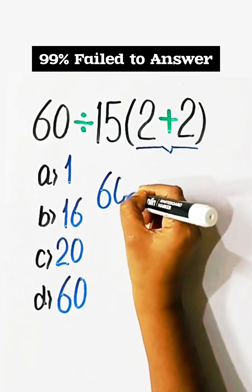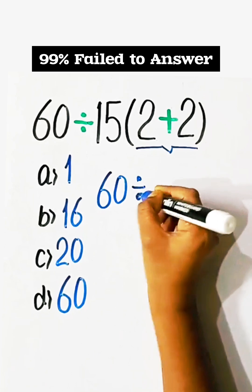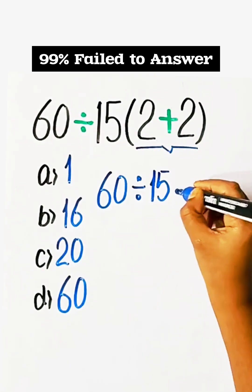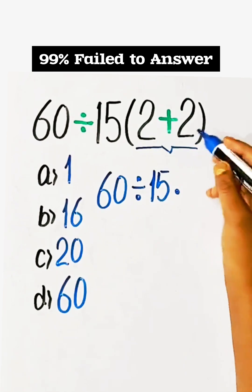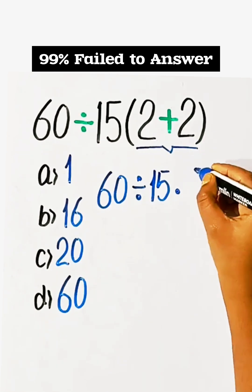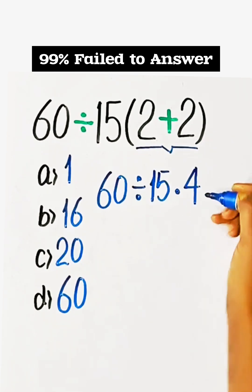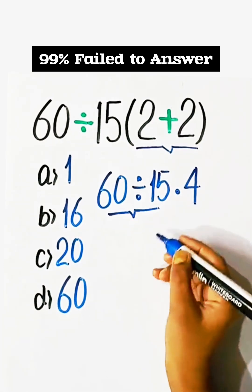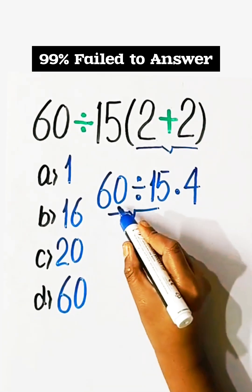60 divided by 15, multiply by 2 plus 2. First, the bracket: 2 plus 2 equals 4. Division comes first, so 60 divided by 15 equals 4.